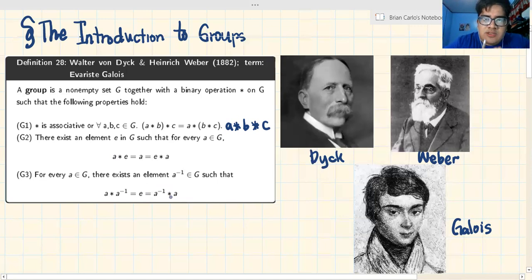Finally, the third property we call G3. For every A, for every element in G named A, there exists an element A inverse in G such that A star A inverse equals the E we mentioned in property number 2, which equals A inverse star A. Now, if those three hold, then you are called a group.